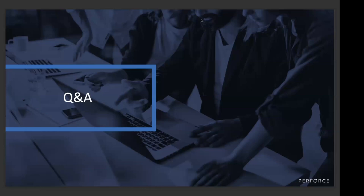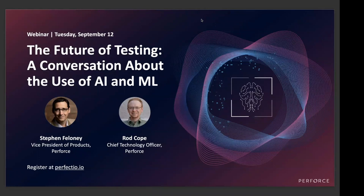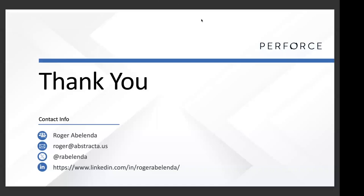We are about to wrap up here. Before we head out, I wanted to let everyone know of an upcoming webinar on September 12th — The Future of Testing: a conversation about the use of AI and ML. This is your chance to gain insights into the market, hear about changes within testing, and learn how Perfecto brings new innovation to their customers. If you are interested, you can head over to BlazeMeter.com or perfecto.io to register. If you have any further questions, please reach out to support@blazemeter.com or message Roger at roger@abstracta.us. As a reminder, keep an eye on your inbox for the recording of today's webinar. Thank you all and I hope you have a great rest of your day.